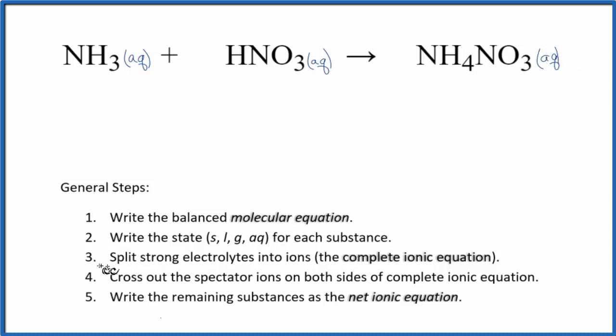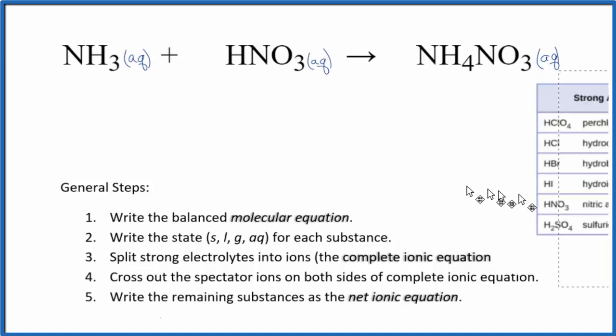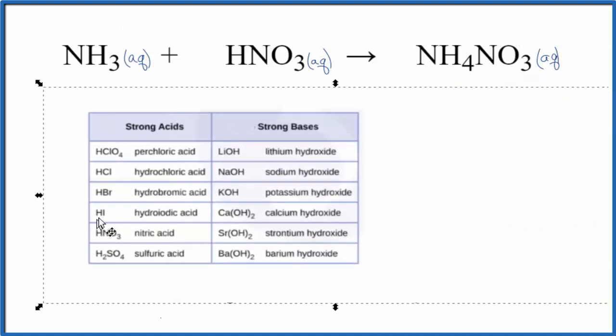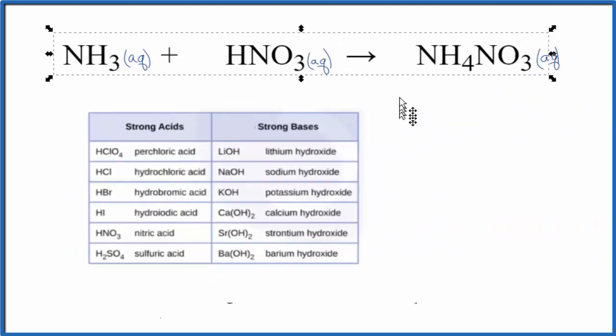So now we can split the strong electrolytes into their ions for the complete ionic equation. So we're assuming the ammonia dissolves, that it's aqueous, but let's take a look of strong acids and bases here to make sure we know what's going on.